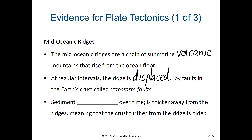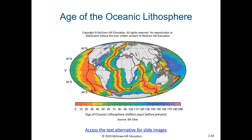On the sea floor, sediment accumulates over time. What we see is that the sediment is thicker away from these mid-ocean ridges and thinner — in fact, non-existent — at the mid-ocean ridge itself. This means that the crust further away from the ridge is older. Here we see a map of the age of oceanic crust, where the reds, oranges, and yellows denote younger ages along the mid-ocean ridge, and the farther you get from these mid-ocean ridges, the older the oceanic crust gets.